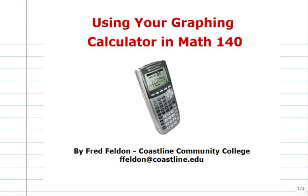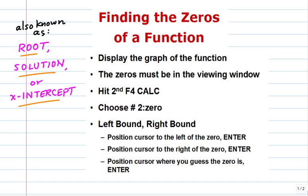Hi everybody, welcome to using your graphing calculator in Math 140. I'm Fred Felden, thanks for watching. In this video we'll use the graphing calculator to find the zeros of a function. The term 'zero' means the input value that, when substituted into the function, gives you the output zero. Other names for this value are root, solution, and x-intercept — they all mean the same thing.